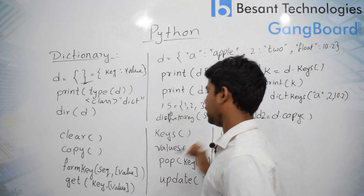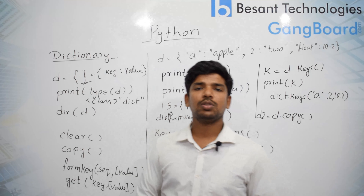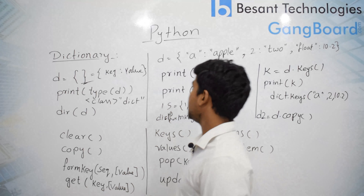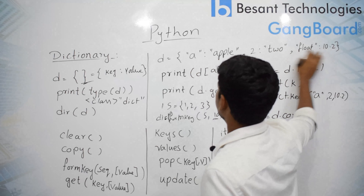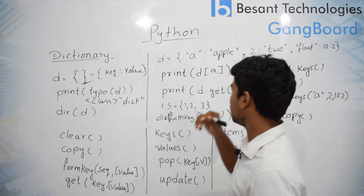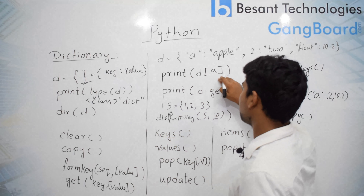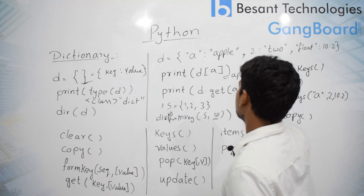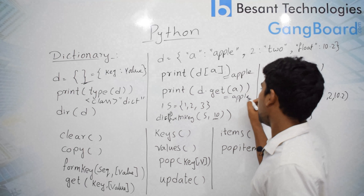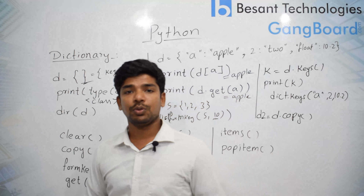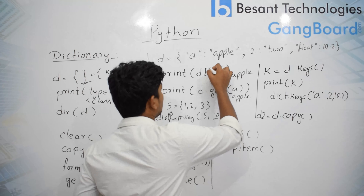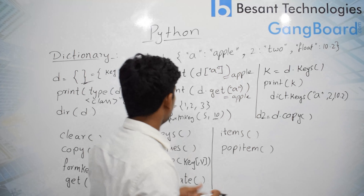Then, get(). In order to get values from a dictionary using a key, we can use the get() function. The values apple, 2, and 10.2 can be accessed using their keys. For example, print(d['a']) will output 'apple'. Similarly, print(d.get('a')) will also output 'apple'. So a value can be called using keys in two ways: direct indexing or using the get() function.